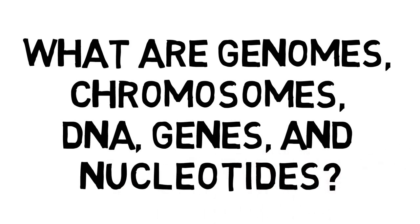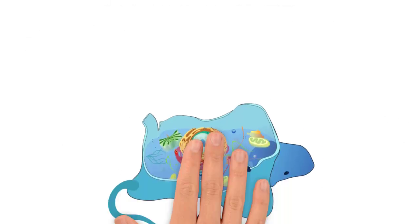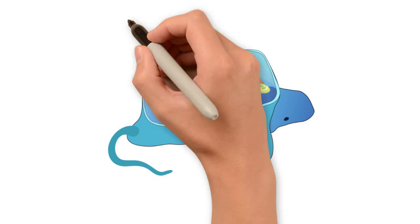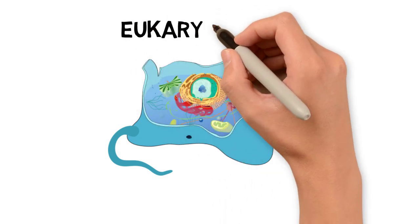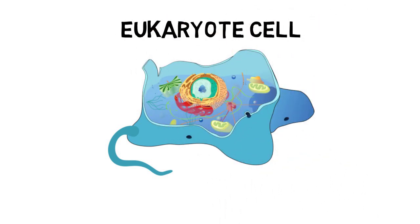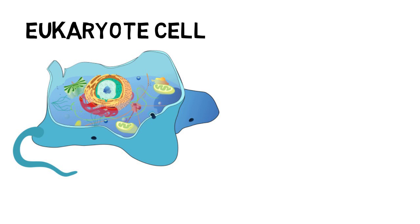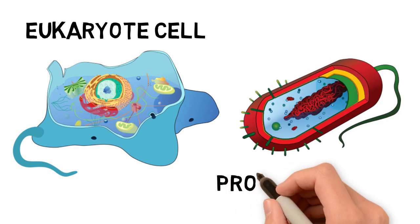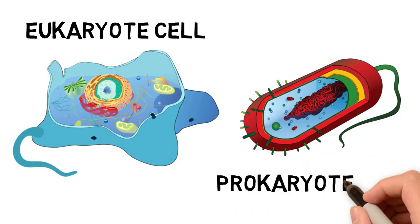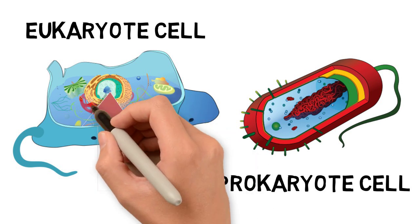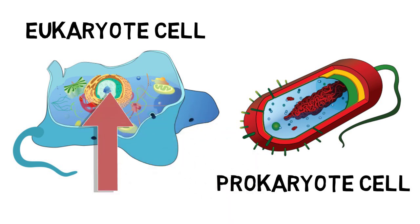A genome is the entire genetic information of an organism. A complete copy of the genome is found in each cell of an organism. In eukaryotes, like animals and plants, the genome is stored inside the nucleus of their cells.